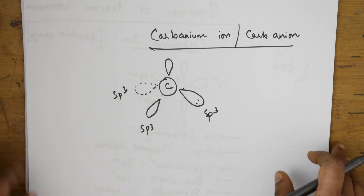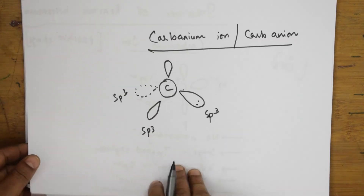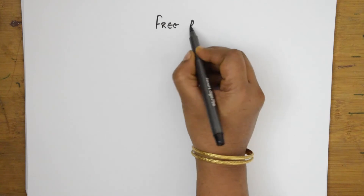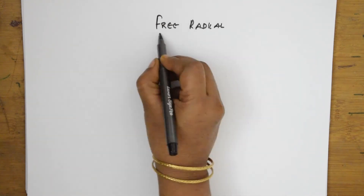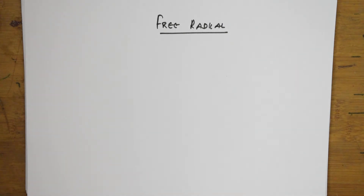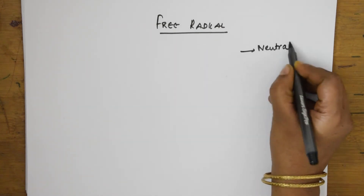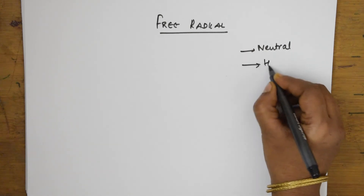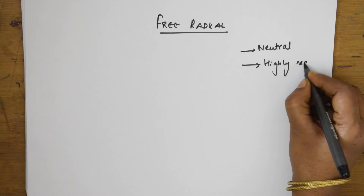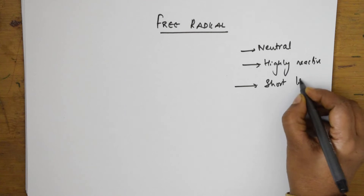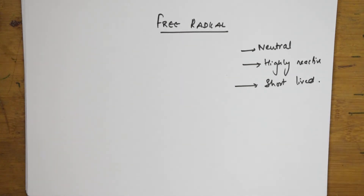Let's come back and see the next reaction species — free radicals. Free radicals are denoted by a dot. The first important characteristic is they are neutral species. They are highly reactive in nature and they are very short-lived, existing for only a very few seconds.